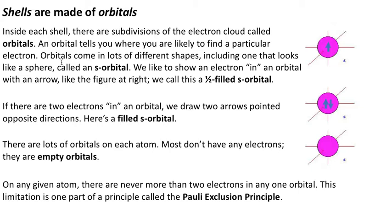Inside each shell, there are subdivisions of the electron cloud called orbitals, and an orbital tells you where you're likely to find a particular electron. They come in lots of different sizes, including one that looks like a sphere, like this one here on the right, which is called an s-orbital. This is just a schematic way of showing that there is an electron in that orbital. In this case there's only one electron in that orbital, and since the maximum is two, we would call this a half-filled s-orbital.